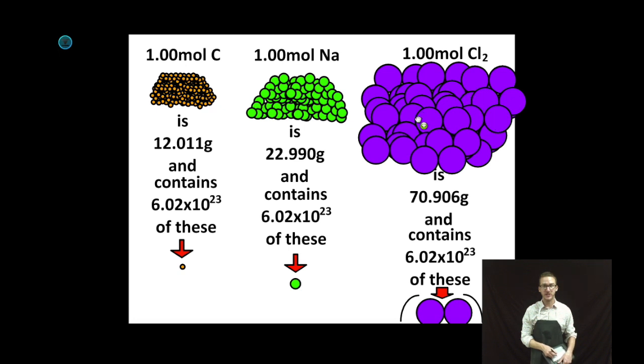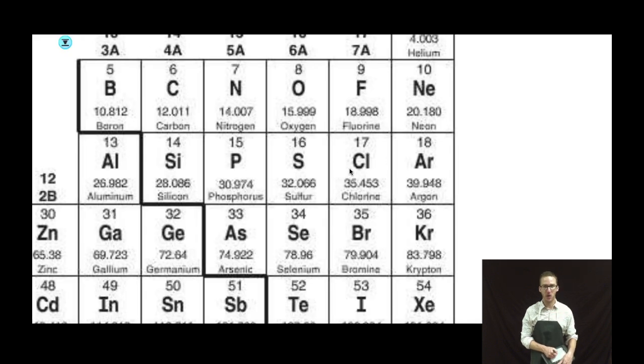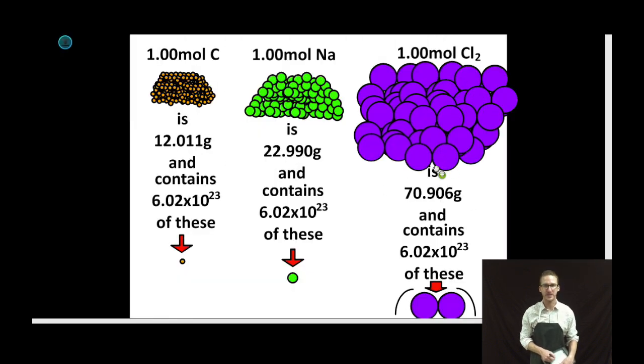Which again is why you see in this image the molar mass of chlorine, which is diatomic, to be double the mass we see of chlorine on the periodic table. Periodic table, diatomic chlorine. Twice the mass.